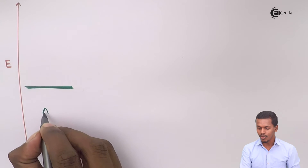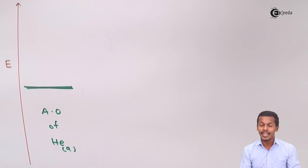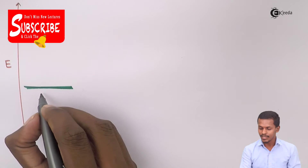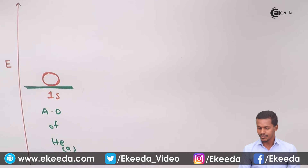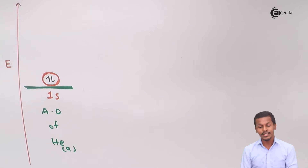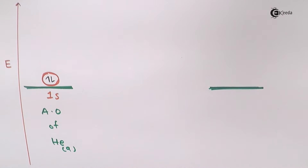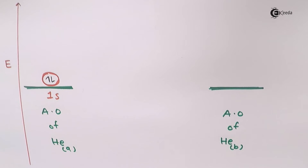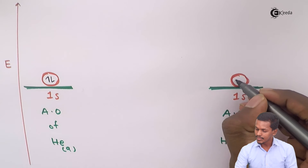This energy level is for the atomic orbital of Helium A, which is the 1s orbital containing two electrons. Similarly, the second helium, Helium B, will have the same energy level. It also has an atomic orbital of 1s and will likewise contain two electrons.